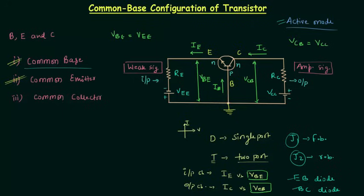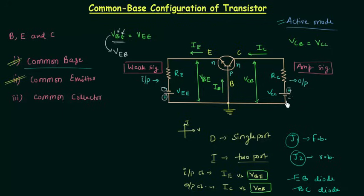There is one very important thing: you cannot write VBE as VEB if you follow the proper nomenclature, because B is at higher potential and E is at lower potential, so B comes first, then E. Similarly, the collector is at higher potential and B is at lower potential, so C comes first and B comes later. These are the correct representations for input voltage and output voltage.